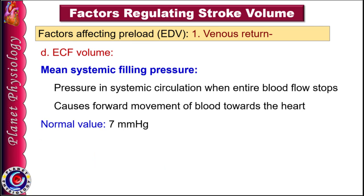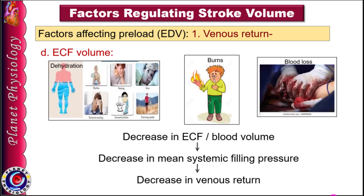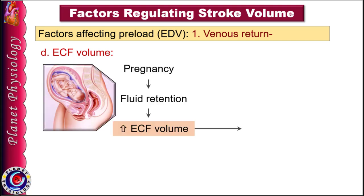Extracellular fluid volume, especially blood volume, determines mean systemic filling pressure — the pressure in the systemic circulation when the entire circulation stops, with a normal value of 7 mmHg. This is the pressure that causes forward movement of blood towards the heart. When blood volume decreases, as in dehydration due to severe diarrhea, vomiting, burns, or blood loss, mean systemic filling pressure decreases, reducing venous return. Any condition increasing extracellular fluid volume increases venous return and cardiac output.